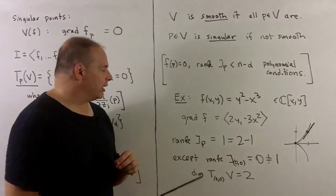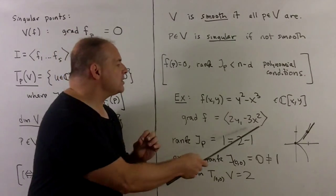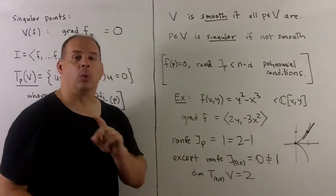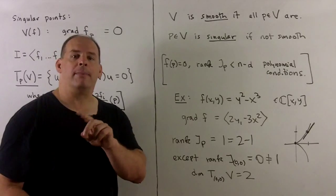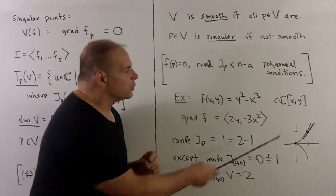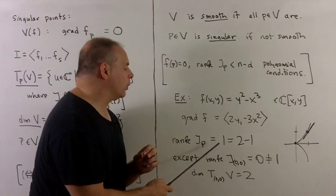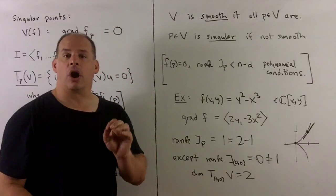If we check our rank condition, the rank of this away from the origin equals one. And if we take n minus the dimension of V, it's one dimensional, so we get 2 - 1 = 1. All points off the origin are smooth.